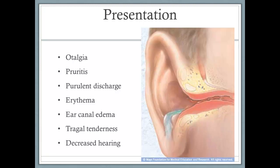Otitis externa commonly presents with otalgia, pruritus, purulent discharge, erythema, ear canal edema, tragal tenderness, and possibly decreased hearing. Symptoms are often mild at first, but get worse if the infection spreads or goes untreated. Commonly a patient will come in complaining of ear pain and discomfort when you pull on the pinna or push on the tragus, very itchy with discharge, redness, sometimes a feeling of fullness in the ear due to swelling, and muffled hearing.